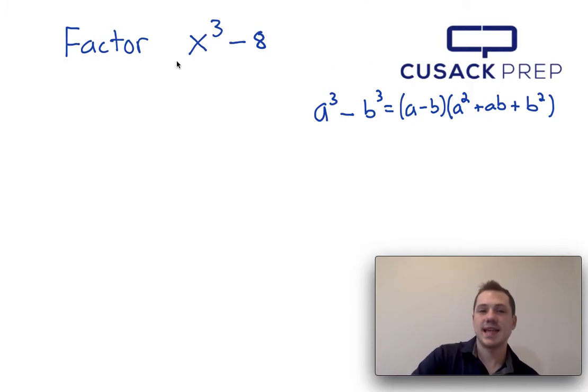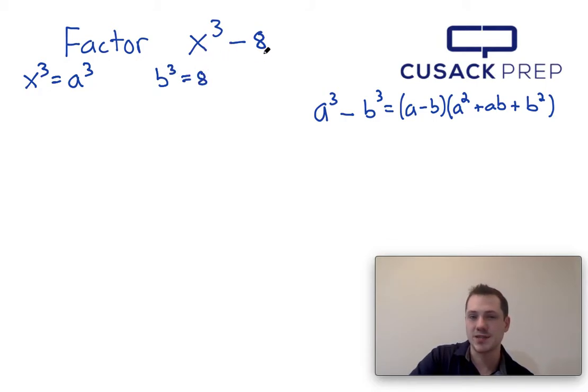Since x cubed is my first term, I can say that x cubed must be equal to a cubed. And since 8 is my second term, I can say that b cubed has to equal 8. You see how these two terms compare to these two terms in the equation. That's how I come up with that.